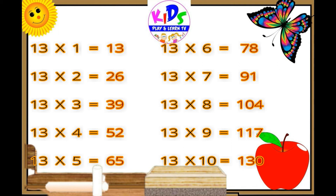13 fives are 65. 13 sixes are 78. 13 sevens are 91. 13 eights are 104. 13 nines are 117. 13 tens are 118. Thank you.